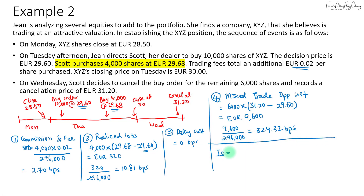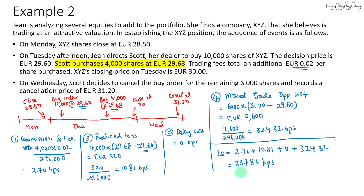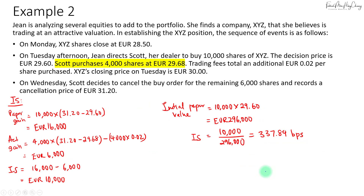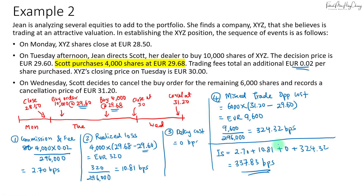Finally, the total implementation shortfall is the sum of all components: 2.7 plus 10.81 plus 0 plus 324.32, which equals 337.83 basis points. This is very close to the 337.84 basis points calculated earlier. In the next video, the last scenario will cover what happens if shares are bought on both Tuesday and Wednesday, and how to handle that implementation shortfall calculation.